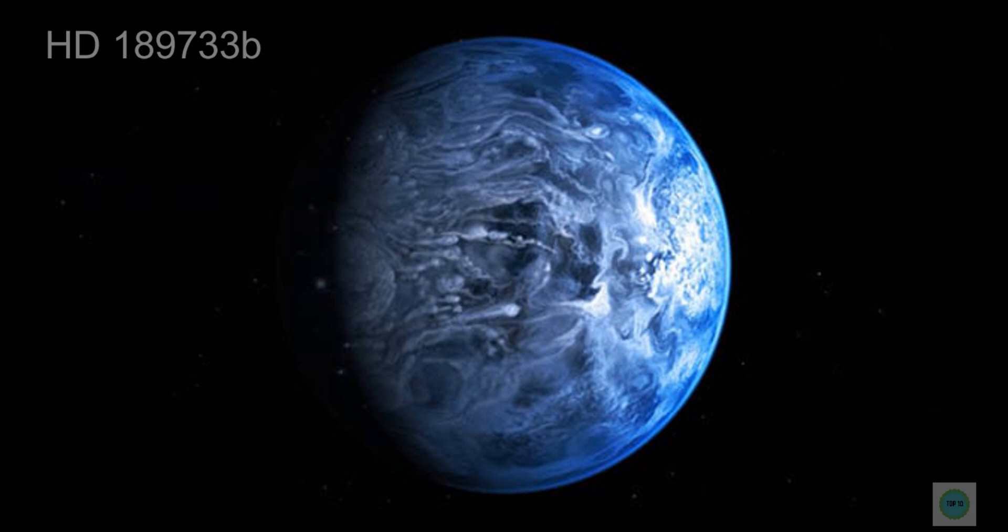Even if we somehow found our way around that, we would still have to deal with the high temperatures on the exoplanet. HD 189733b is so close to its star that it is ludicrously hot. It is so close to its sun that HD 189733b finishes a revolution around its star in 2.2 Earth days.